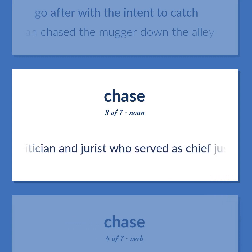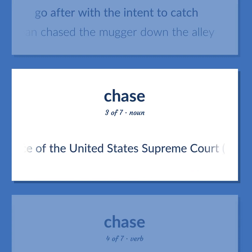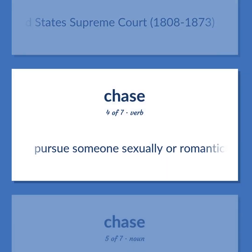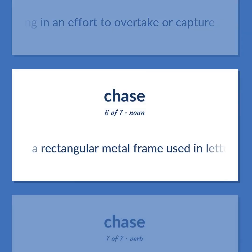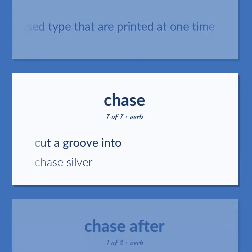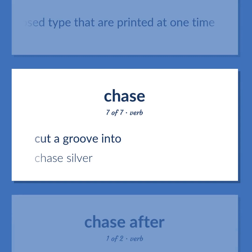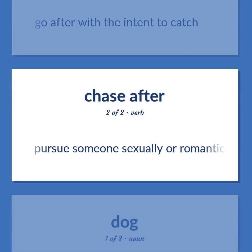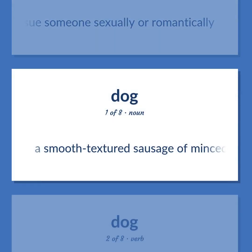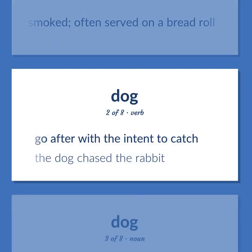United States politician and jurist who served as chief justice of the United States Supreme Court, 1808–1873. Pursue someone sexually or romantically. The act of pursuing in an effort to overtake or capture. A rectangular metal frame used in letterpress printing to hold together the pages or columns of composed type that are printed at one time. Cut a groove into. Chase silver. Go after with the intent to catch. Pursue someone sexually or romantically. A smooth textured sausage of minced beef or pork usually smoked, often served on a bread roll. Go after with the intent to catch. The dog chased the rabbit.